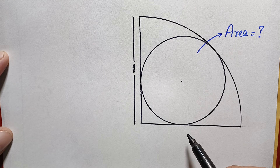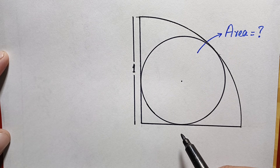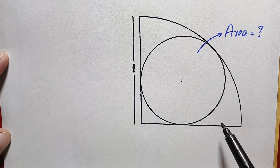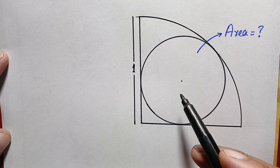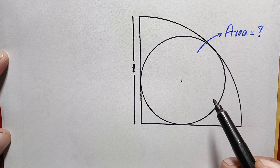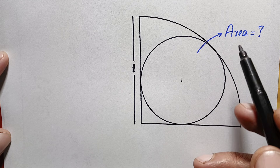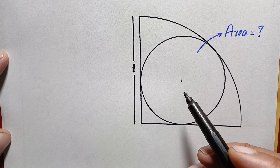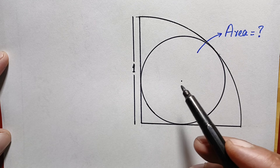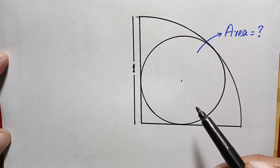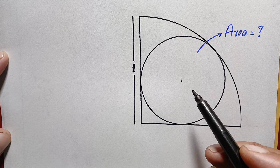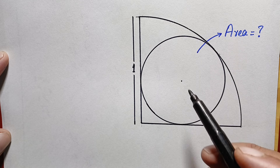Hello everyone, you are welcome. Today we have a very interesting geometric math problem. Here we have a quarter circle with radius one and there is a circle inside the quarter circle. Our target is to find out the area of this circle. As we know, the area of a circle is π r².